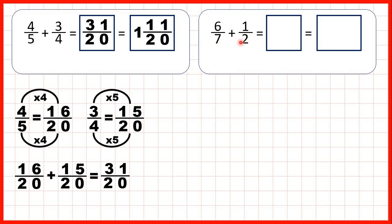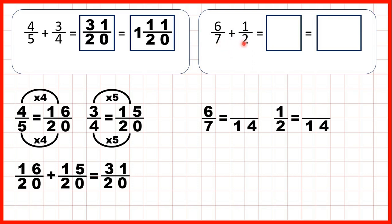Seven isn't in the two times table, so we'll need to find equivalent fractions for both six-sevenths and one-half. The lowest common multiple of seven and two is fourteen, so we can find two equivalent fractions which both have a denominator of fourteen.